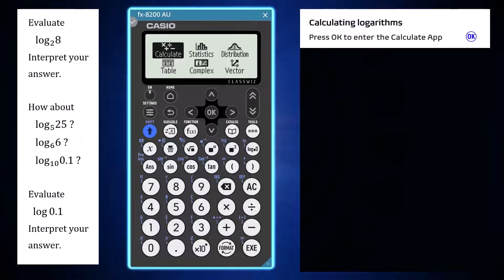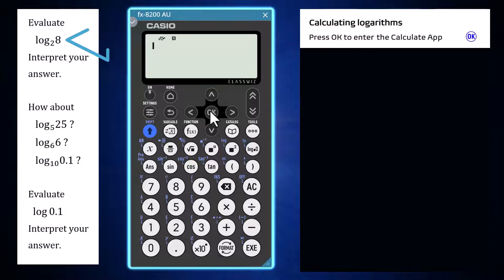Using the Calculate app of a Casio FX 8200 AU, open from the home screen by pressing OK, logarithms or logs for short can be evaluated.